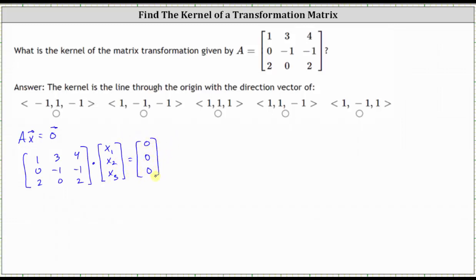And now we need to solve the system. Let's go ahead and write an augmented matrix, where the first row is 1, 3, 4, 0; the second row is 0, negative 1, negative 1, 0; and the third row is 2, 0, 2, 0.